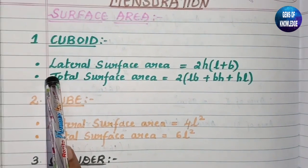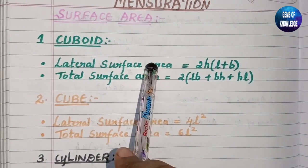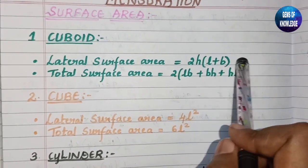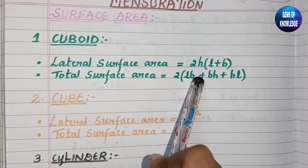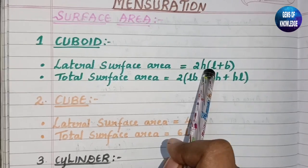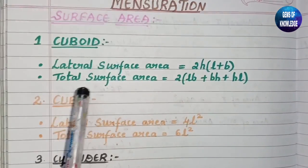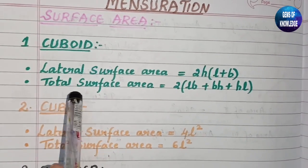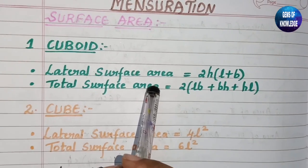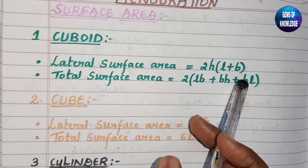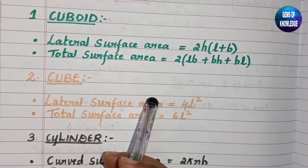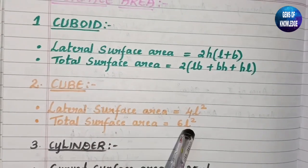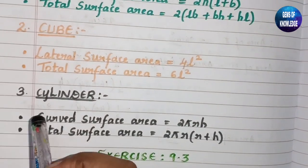For the cuboid, the lateral surface area is 2h(l + b), where h is height, l is length, and b is breadth. The total surface area of a cuboid is 2(lb + bh + hl). Similarly, the lateral surface area of a cube is 4l² and the total surface area of a cube is 6l².